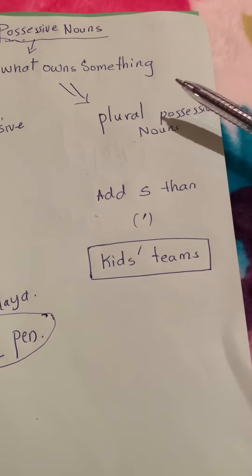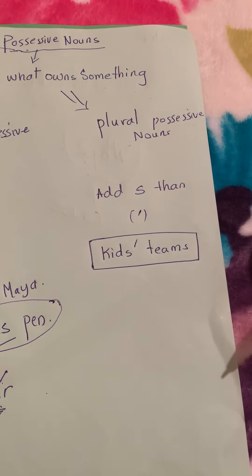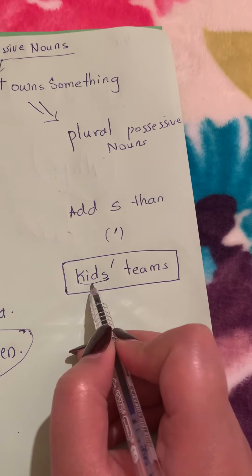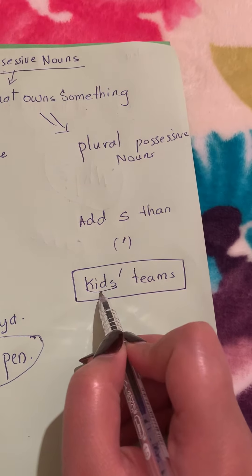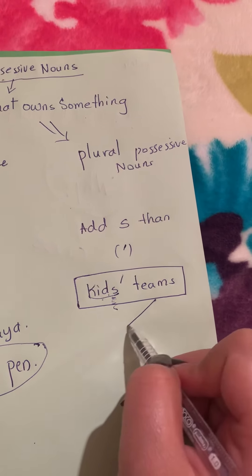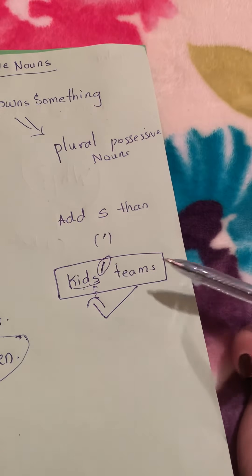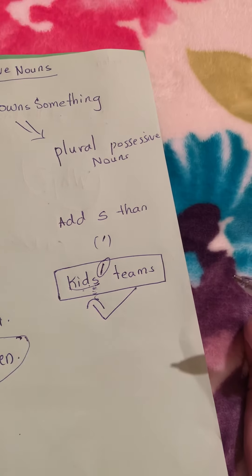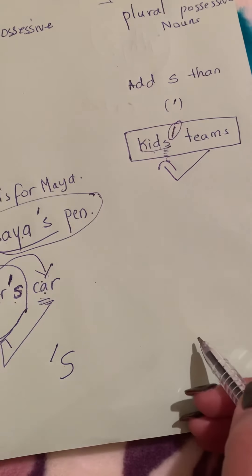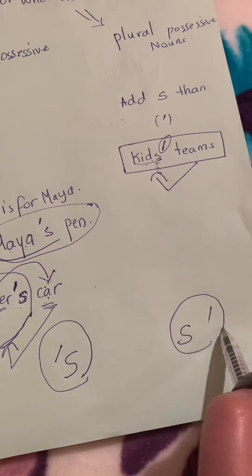What about the plural noun? For a plural noun the rule is similar, with one key difference. Take the word 'kids' — there is already an S at the end, which tells us this noun is in plural form. So to show ownership, because 'kids' already has an S, we only add an apostrophe after the S: kids' team. Clear? So: singular form — apostrophe then S; plural form — S then apostrophe.